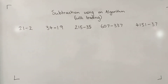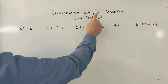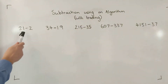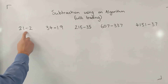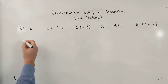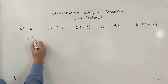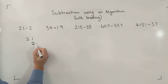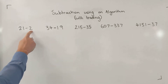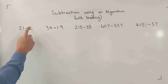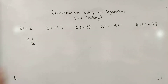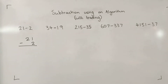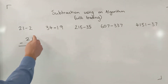Hey mathematicians, let's do some more subtraction using a written algorithm, this time with trading. Let's take a look at our first example: 21 take away 2. Just like any algorithm, I need to write it out nice and neatly to start. 21, the bigger number, on top; 2, the smaller number, beneath it. I'm putting my ones column nice and neatly, my 1 underneath my 1, keeping that column, my answer line, and my symbol.